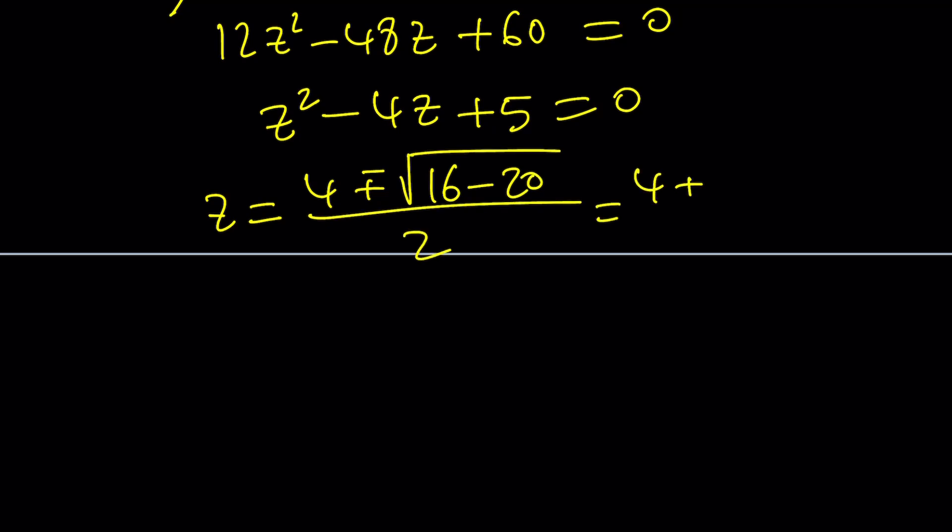16 minus 20 is negative 4. That gives us 4 plus minus 2i over 2. And after division by 2, we get 2 plus minus i. As you can see here, we got complex non-real solutions. That's why I call this a complex system.